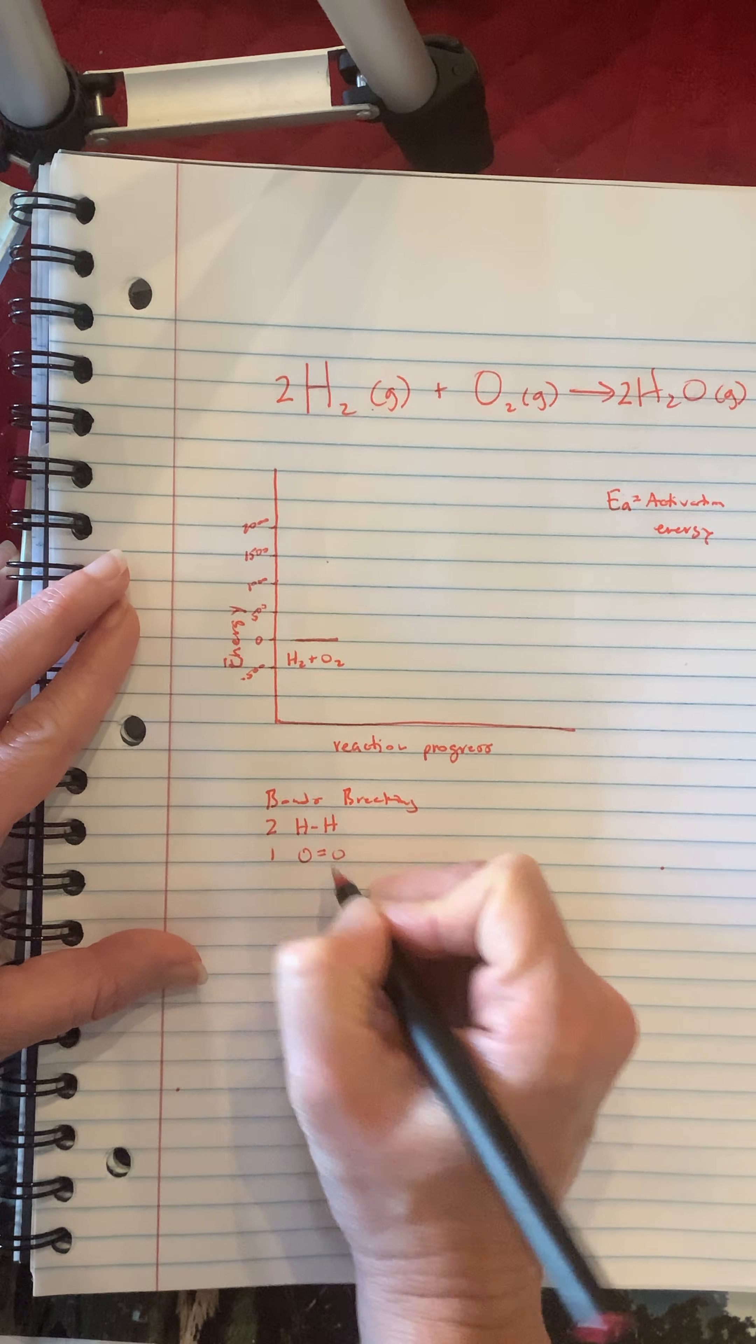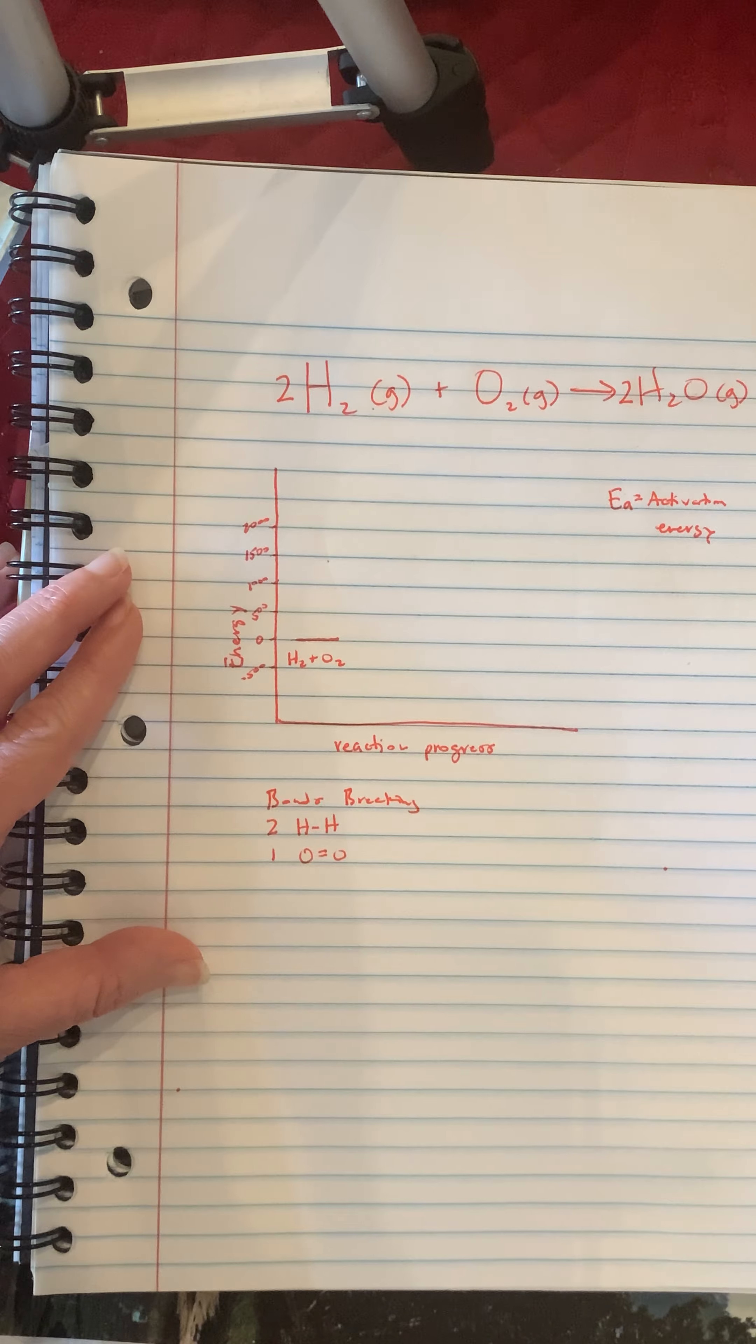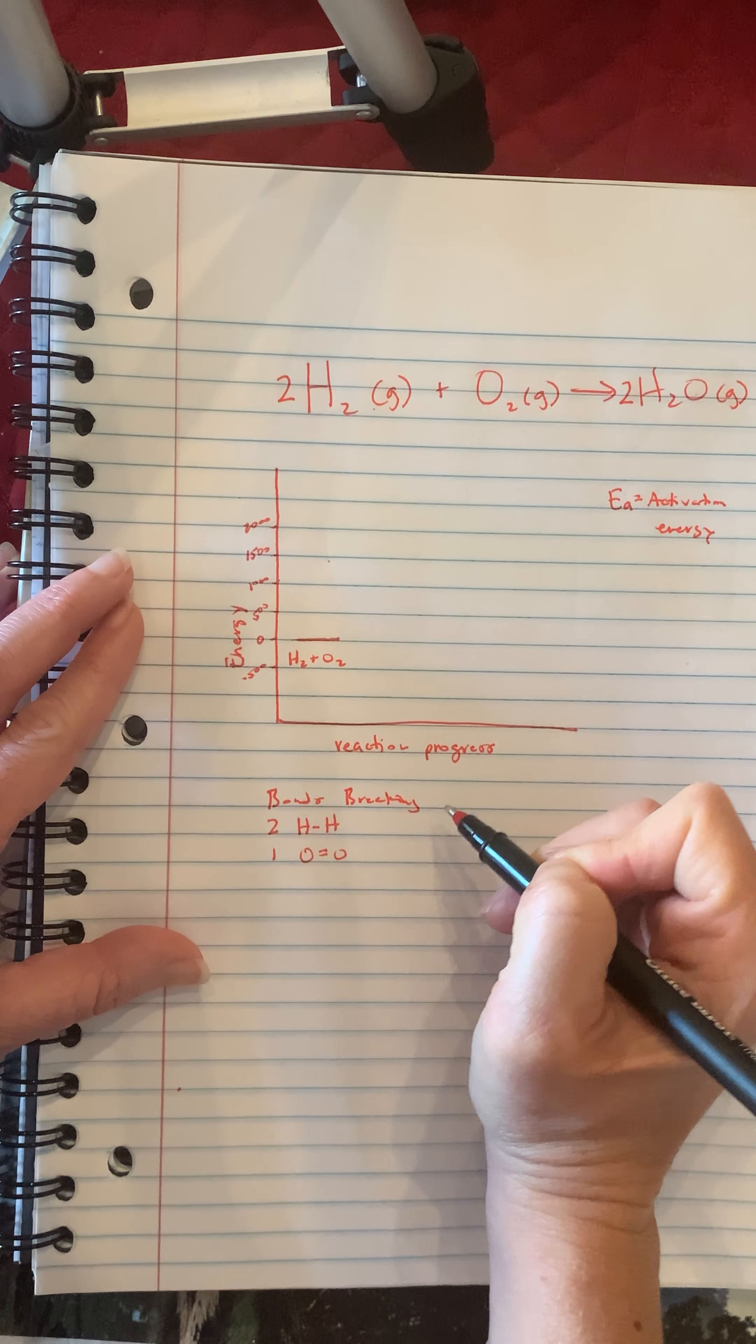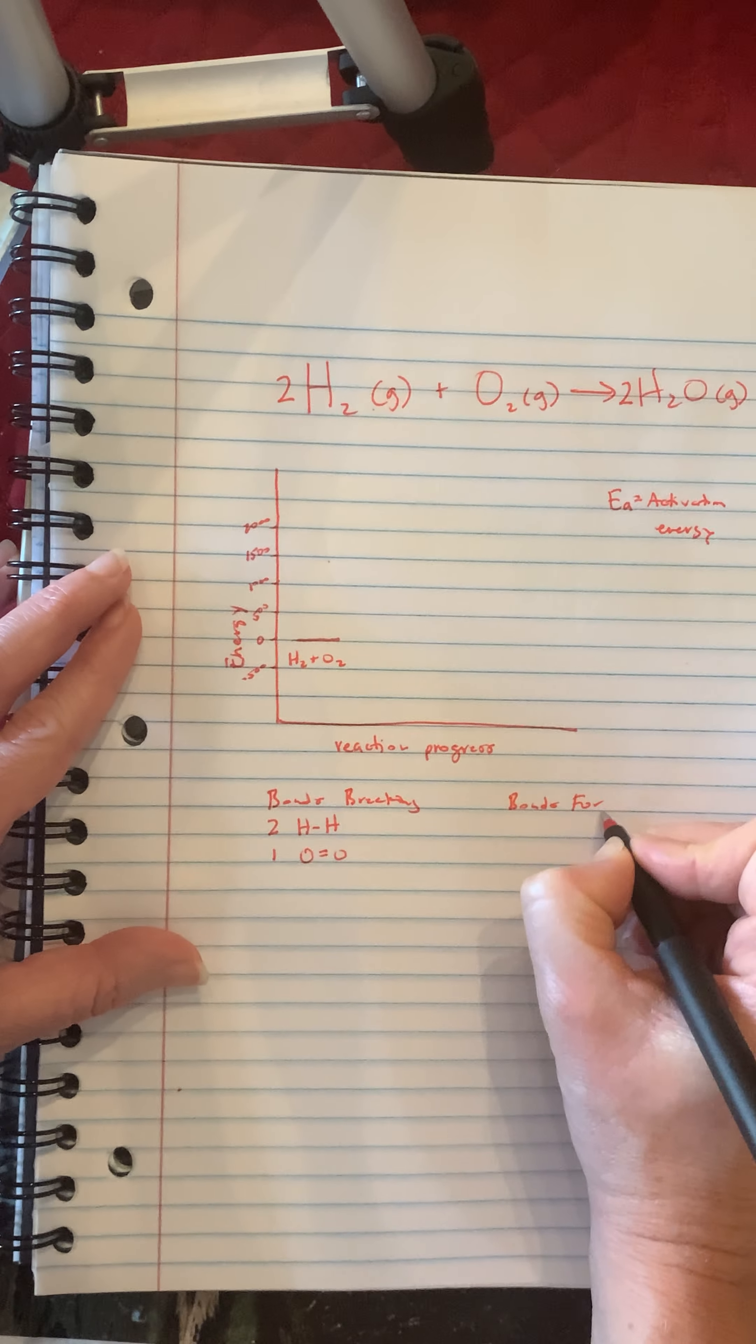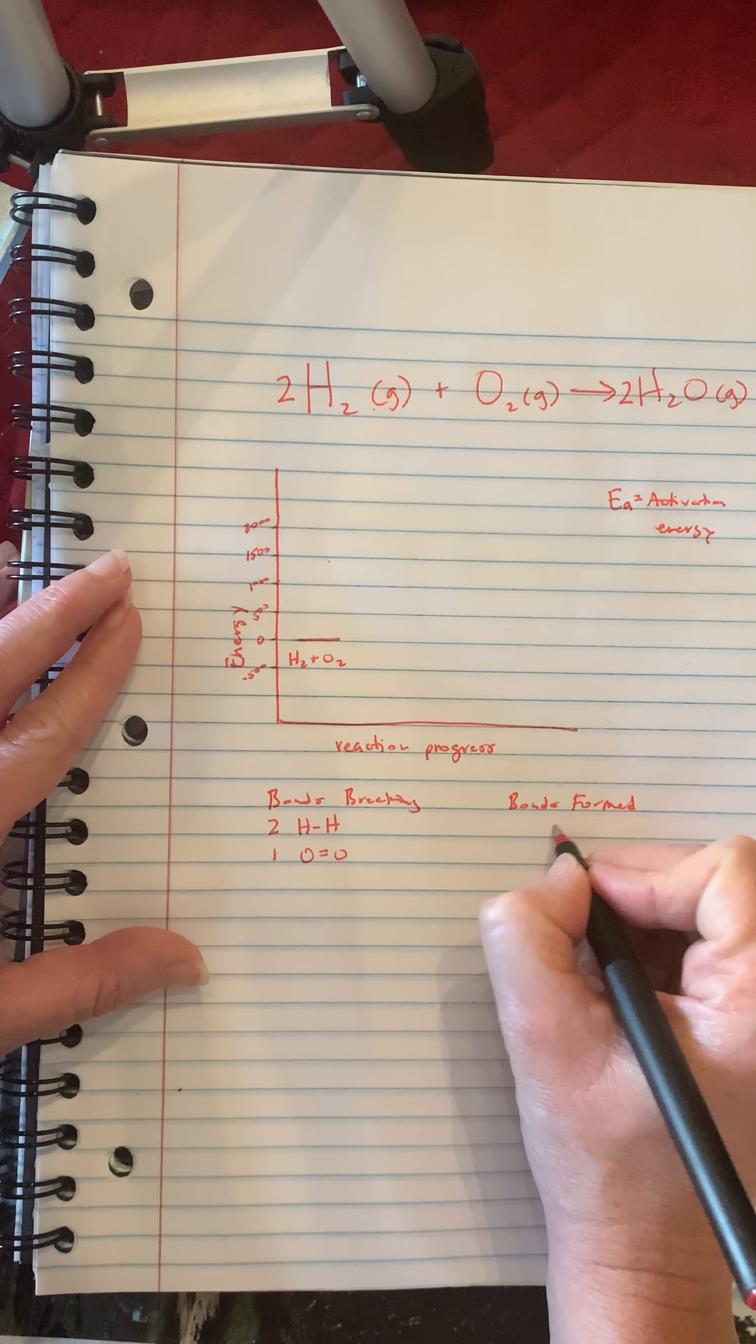Okay, so we have two of these H to H bonds being broken and one of these O to O bonds. One and it's a double bond between the oxygens. If we draw the Lewis structure we'll see that it needs a double bond there. Okay, so we are breaking two of these and one of these to get this reaction started. We will end up forming new bonds. So bonds formed will be between the hydrogen and the oxygen.